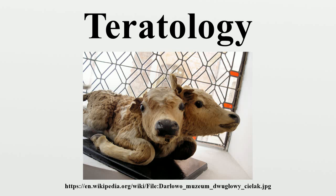There are critical periods of susceptibility to agents and organ systems affected by these agents. Teratogenic agents act in specific ways on developing cells and tissues to initiate sequences of abnormal developmental events. The access of adverse influences to developing tissues depends on the nature of the influence. Several factors affect the ability of a teratogen to contact a developing conceptus, such as the nature of the agent itself, route and degree of maternal exposure, rate of placental transfer and systemic absorption, and composition of the maternal and embryonic fetal genotypes. There are four manifestations of deviant development, and these increase in frequency and degree as dosage increases from the no observable adverse effect level to a dose producing 100% lethality.